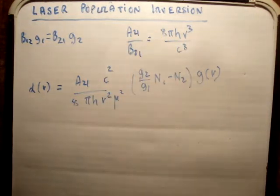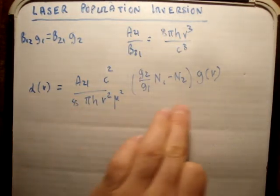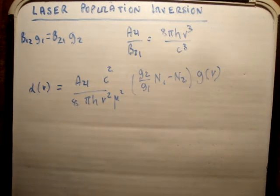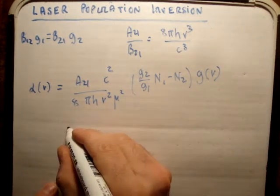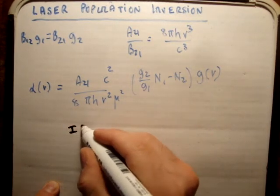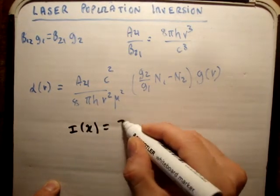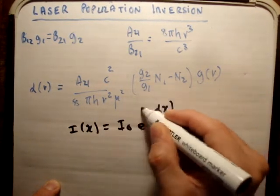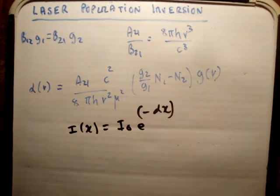And I proved this particular ratio here, and I proved the laser loss coefficient, alpha of nu. So just to remind you, I of x is equal to I0 e to the minus alpha of x. So this is basically the attenuation of your laser beam inside your Fabry-Perot cavity.